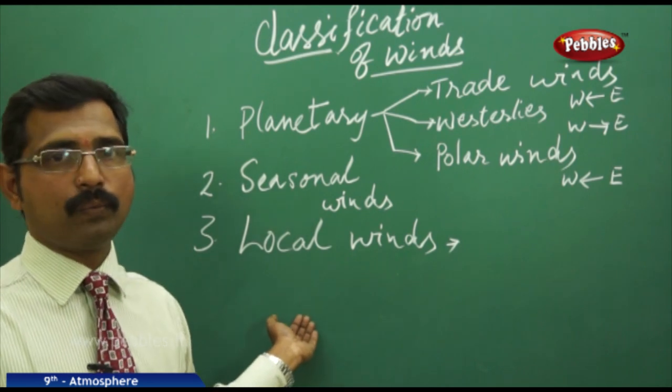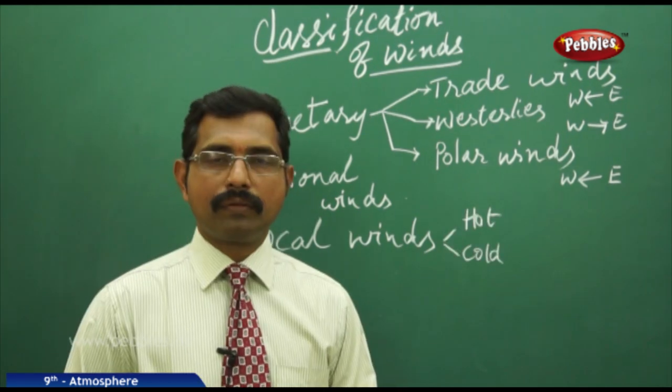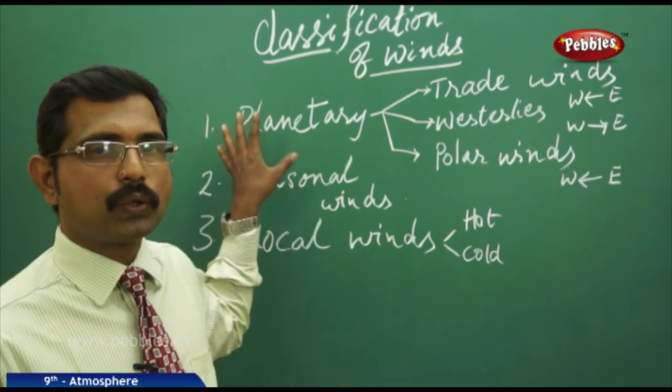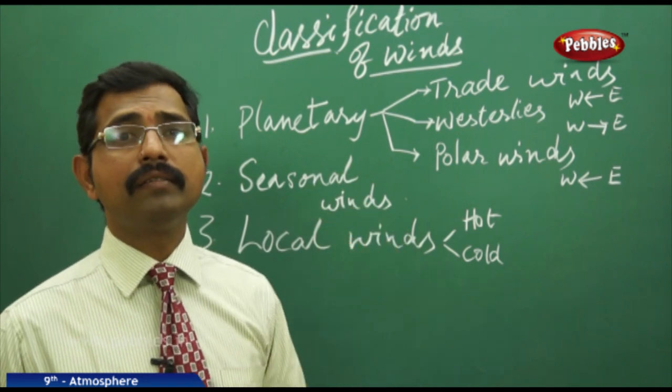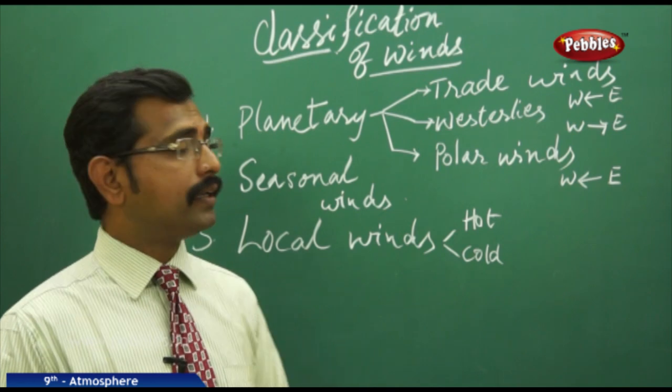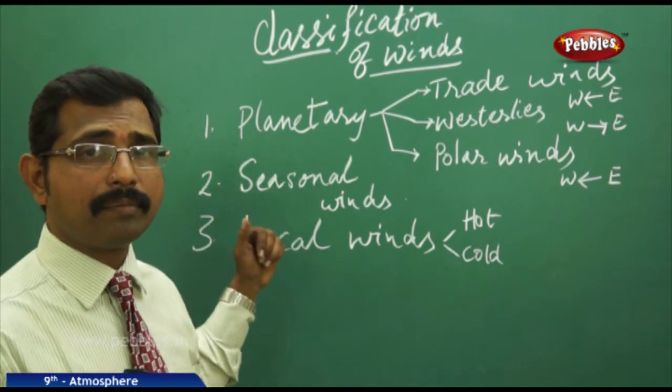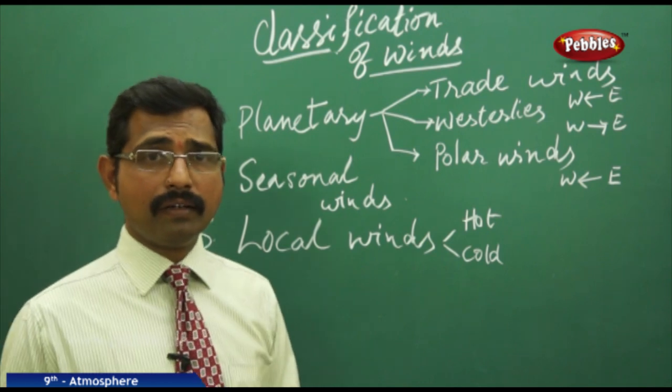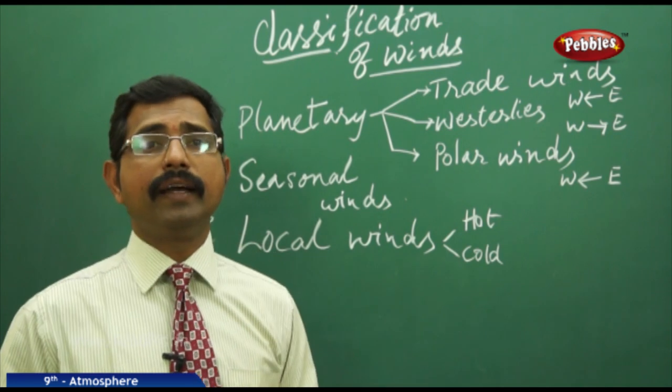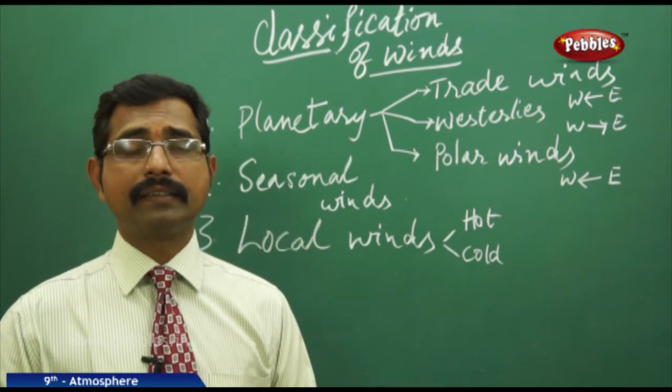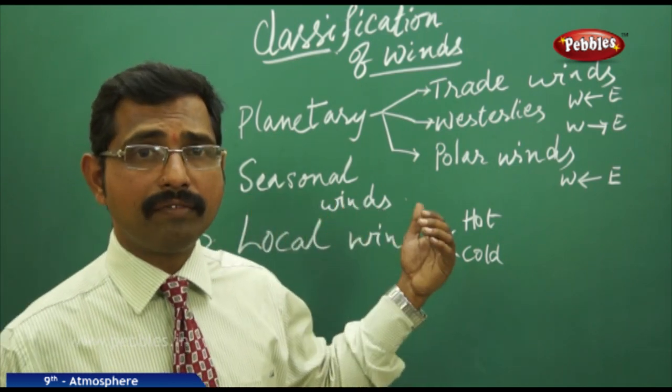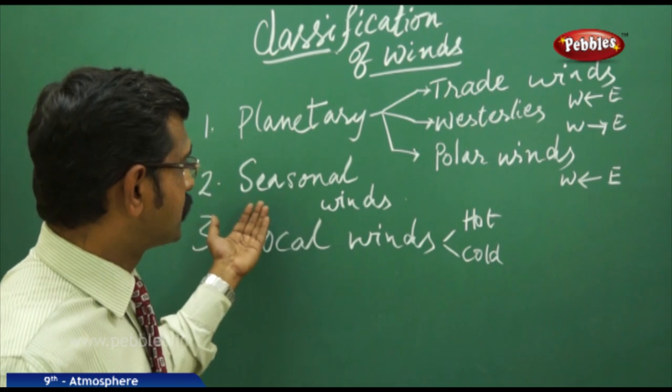Rainfall in India is majorly affected by seasonal winds. Due to this seasonal wind effect, we get monsoons—southwest monsoons and also northwest monsoon in winter. In summer, southeast trade winds will travel and cross the equator, and we get this effect from the southeast trade winds.